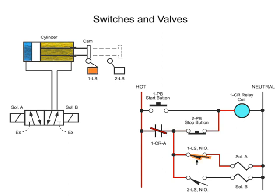Since limit switch 1LS is held closed by the cam prior to the beginning of the cycle, current flows through this switch and activates solenoid A. Since limit switch 2LS is open prior to the beginning of the cycle, current cannot flow and thus solenoid B remains de-energized.